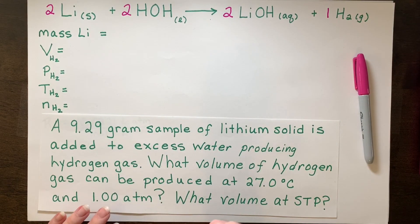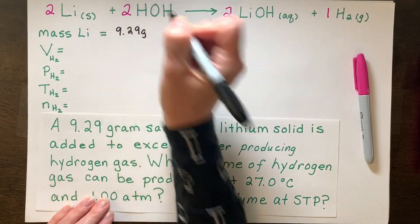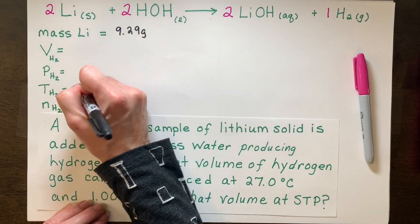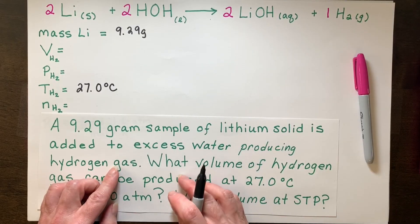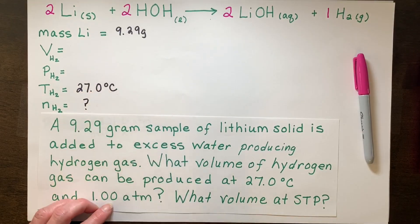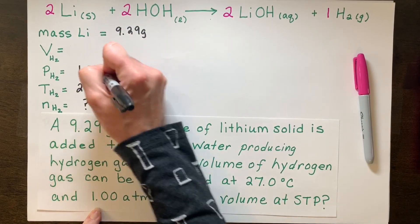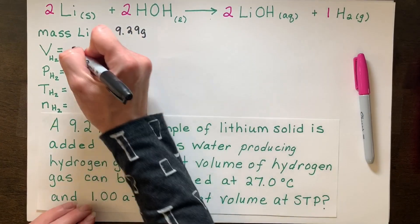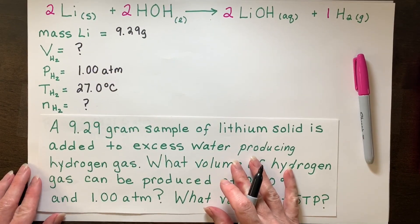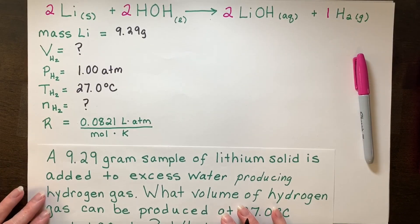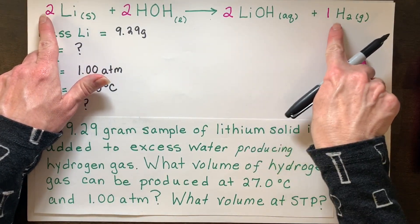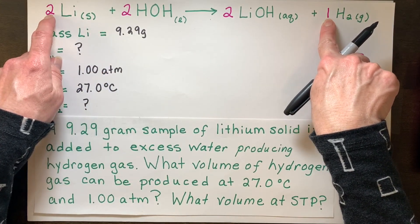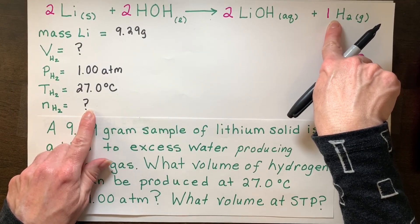The first step is to write down all our givens. The mass of lithium was 9.29 grams. The temperature is 27 degrees — labeled for hydrogen, because if I'm going to use PV equals NRT, it has to be for the substance that's a gas. I do not know the moles — question mark there. I do know I'm at 1 atm. Right now we have two different question marks: I don't know the volume, and I also don't know the moles. So it's not a good time to use PV equals NRT because we don't have all the variables. We're going to take this mass of lithium, turn it into moles of lithium, then use the mole ratio to find how much lithium can turn into hydrogen gas, and then use that mole amount of hydrogen gas to solve for our volume.